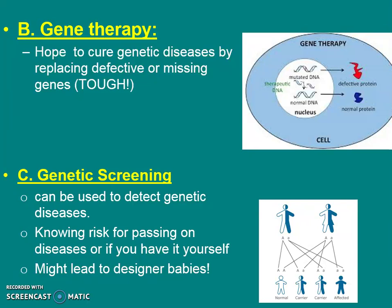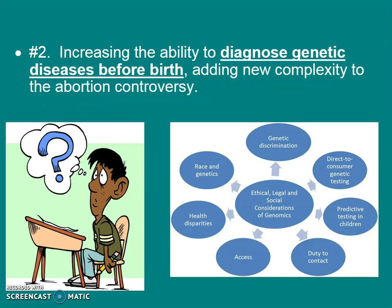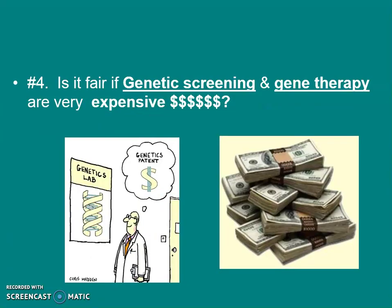All of this leads to a lot of questions — about ten or so. Harmful organisms might accidentally be produced if we're playing around with DNA a lot, and that worries people. People are also worried that increasing the ability to diagnose genetic diseases before birth might cause people to decide not to have babies. Should we be changing genes in humans — like deciding your baby should be super buff, have purple hair, or different eye color? That raises serious questions.